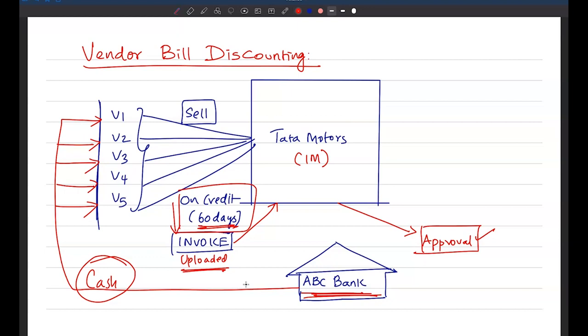And in that process this bank also has made income through discounting charges. And this bank also has very little risk here. Because whatever the money that was given by the bank to these vendors need not be repaid by them. Rather it will be paid by Tata Motors on that due date, that is 60th day. So on 60th day Tata Motors will honor all the invoices and that payment will come to this bank. So this is how vendor bill discounting happens.